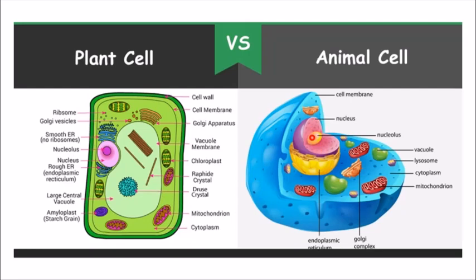Inside the nucleus, we have our DNA; the chromosomes are also present here. So inside the nucleus, we will have our chromosomes and DNA. In the plant cell also, we have the nucleus. Around the nucleus, we have the endoplasmic reticulum. Endoplasmic reticulum can be of two types: rough endoplasmic reticulum or smooth endoplasmic reticulum, and both are present in plant cell and in animal cell.